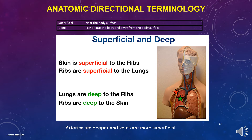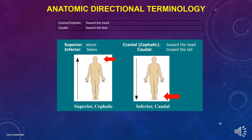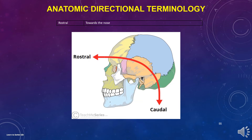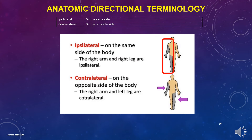Cranial and cephalic means toward the head. Caudal means toward the feet. Rostral means toward the nose. Ipsilateral means on the same side — the shaded areas of the arm and leg are on the same side. Contralateral means on the opposite side.